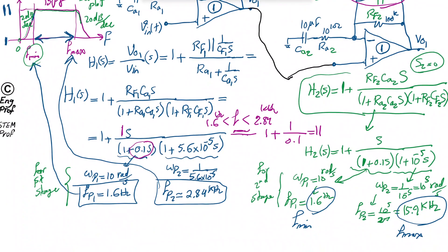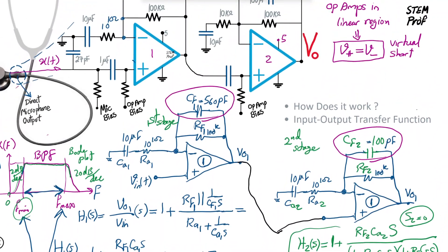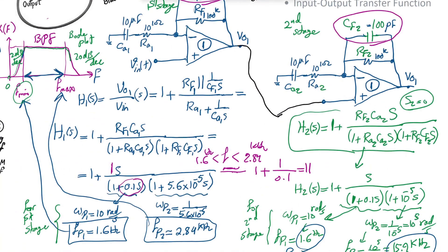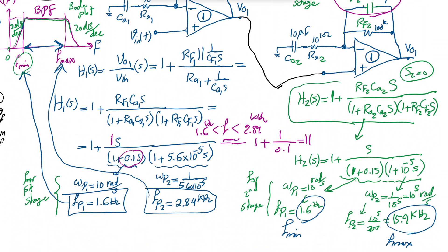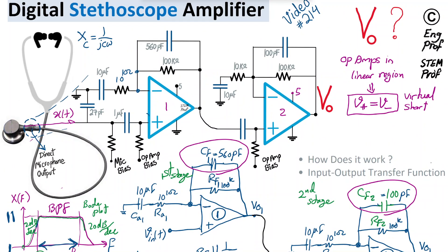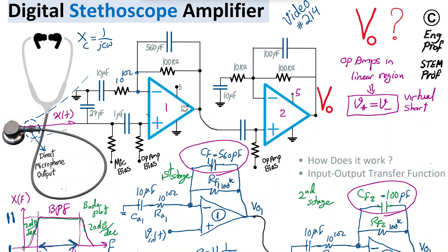Each stage provides a midband gain of 11, so the two-stage cascade achieves a total gain of 11 × 11 = 121. The design cancels noise below 1.6 Hz and above 2.84 kHz (stage one) and especially above 15.9 kHz (stage two). This example illustrates how basic signal conditioning and noise cancellation can be achieved by combining bandpass filtering and amplification using a two-stage op-amp design for interfacing in a digital stethoscope amplifier.